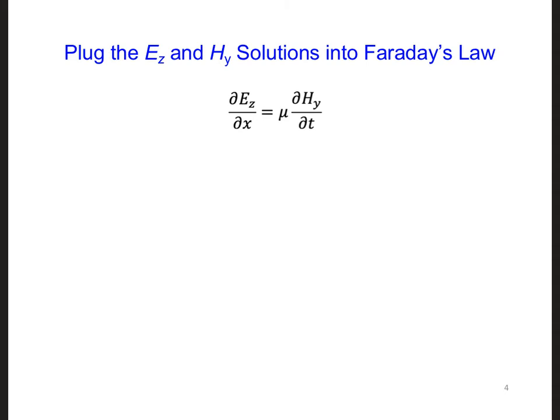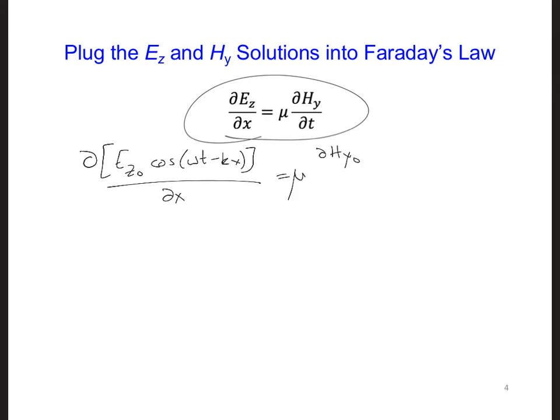If we plug the solutions for E z and H y into this form of Faraday's law, we're going to get the partial x derivative of E z naught cosine omega t minus kx over, that's partial x derivative, and that's equal to mu dH y naught cosine omega t minus kx, partial time derivative.